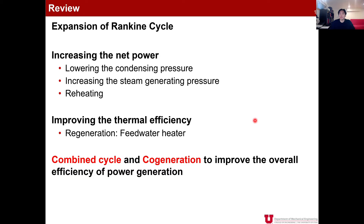Then how can you improve the thermal efficiency? In order to improve the thermal efficiency, we could use regeneration by using a feed water heater. In realistic steam power plants, we use several feed water heaters to preheat the water before it goes to a boiler. This saves the fuel or energy that we have to input to the boiler or steam generator, and by this amount we can improve the thermal efficiency.